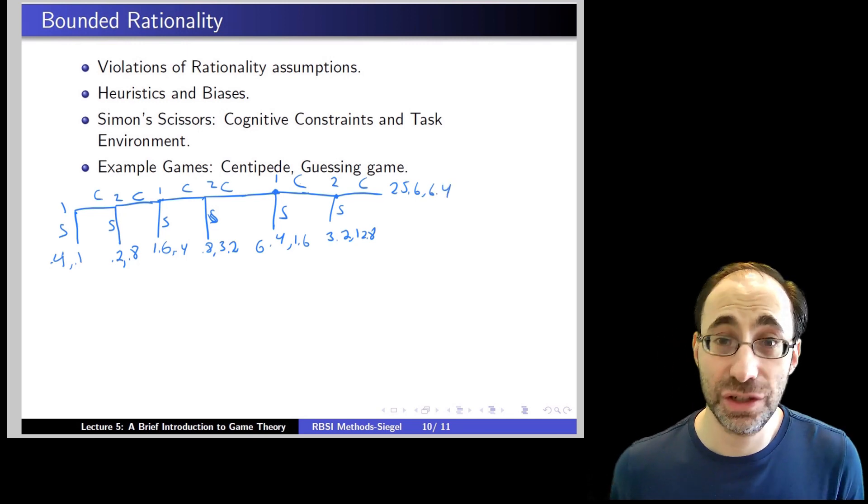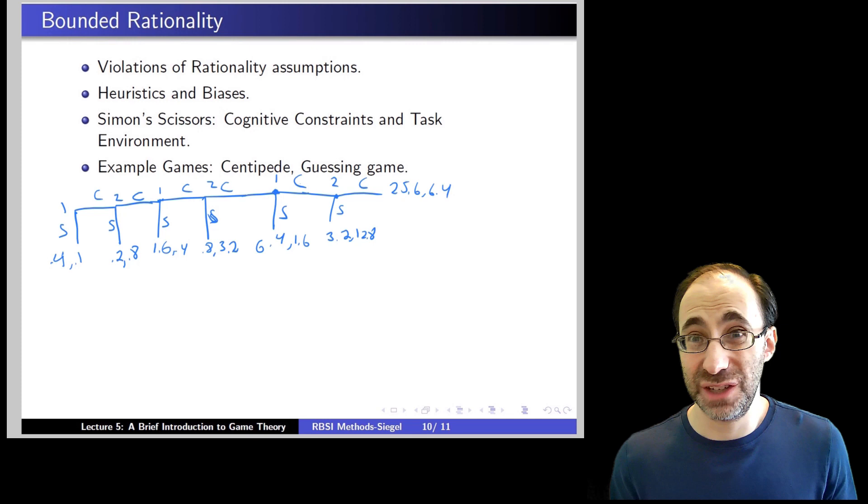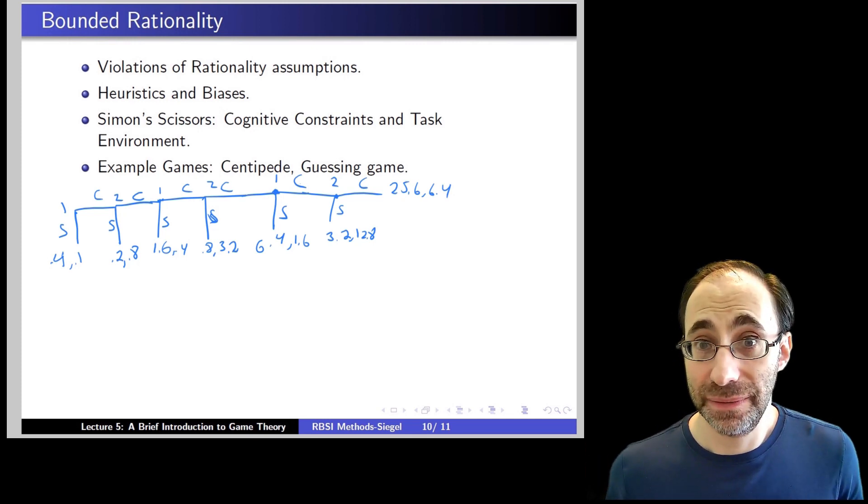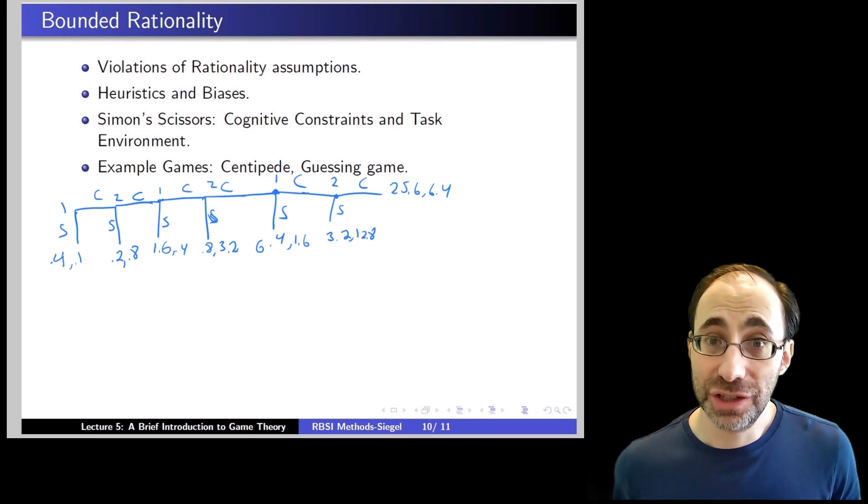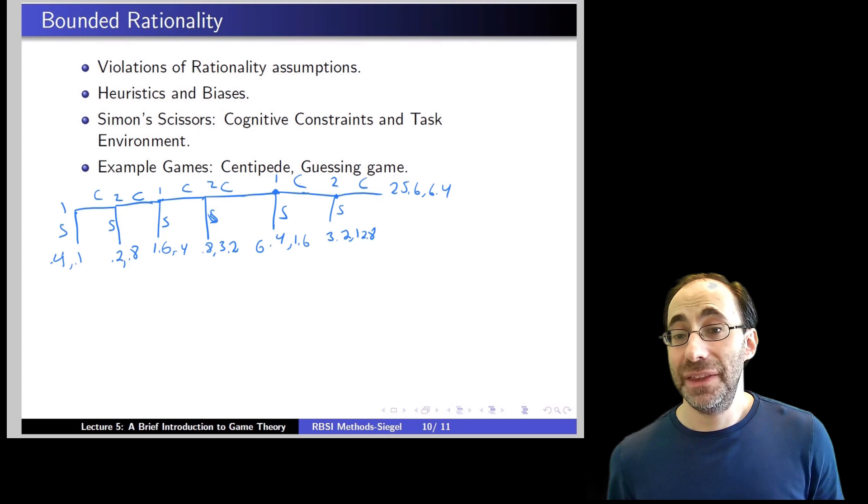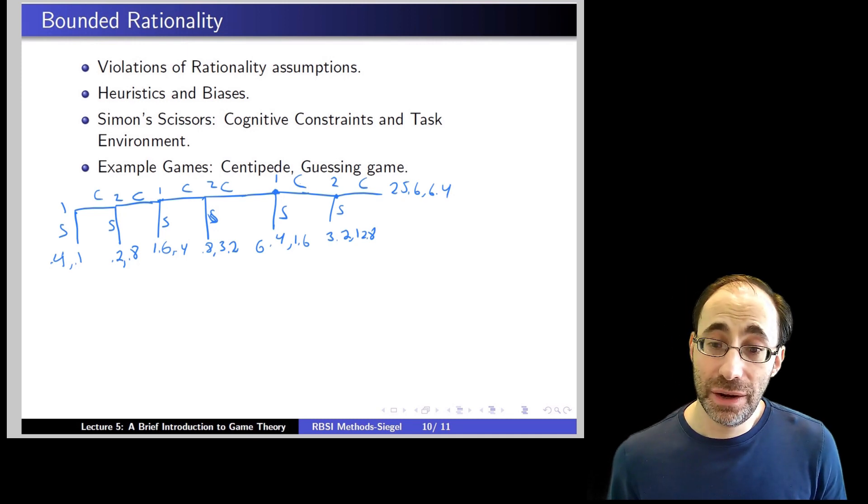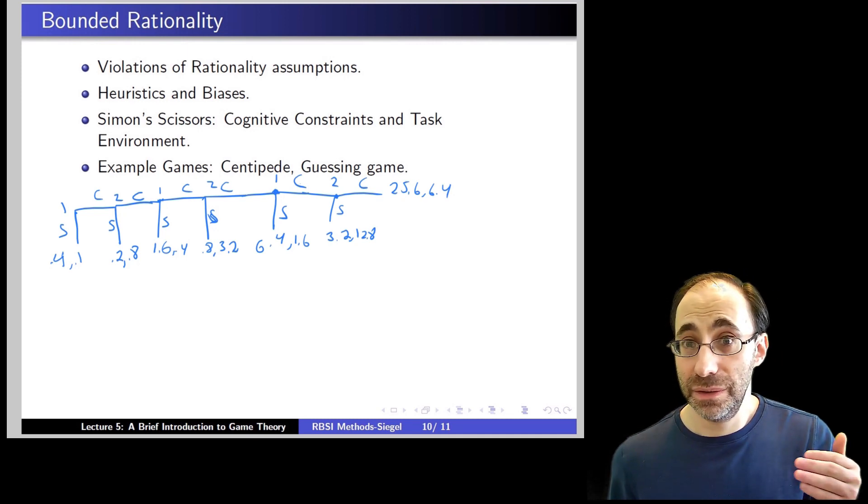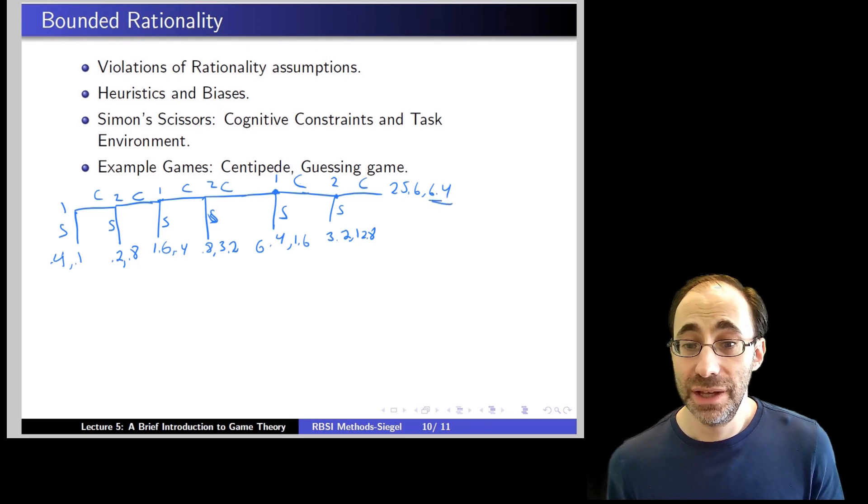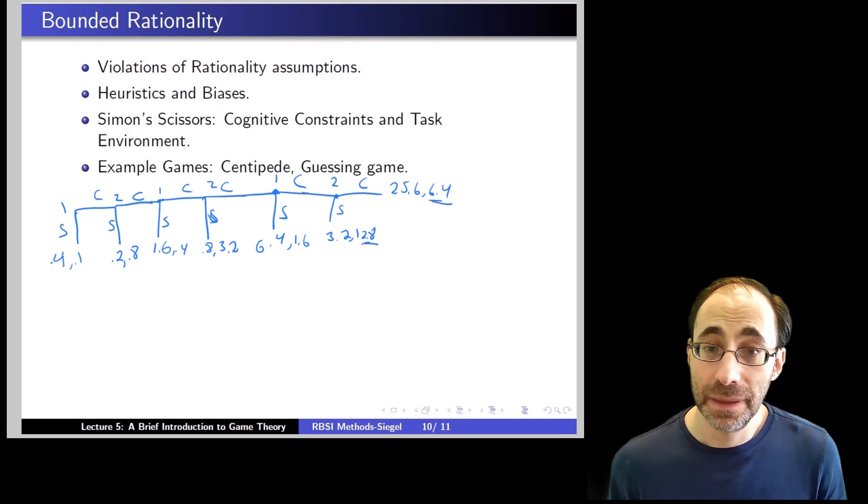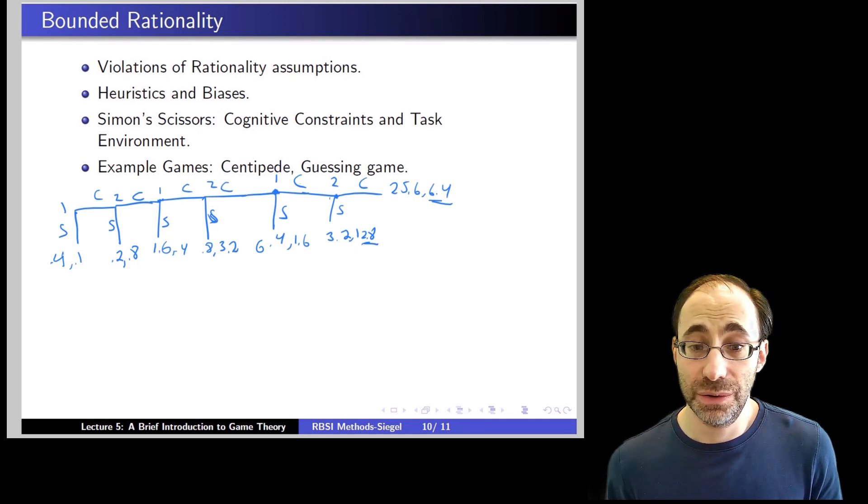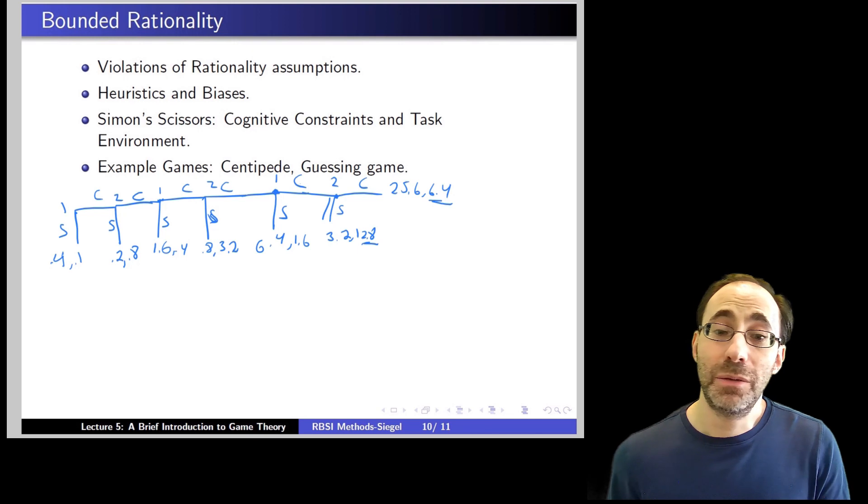Now, the first question here, as you should always do when you're dealing with bounded rationality, is to figure out what the rational decision would be first. What should the player do rationally? Well, we've used backward induction. This is a sequential game, so we can use backward induction. In the last period, we're comparing player two's payoffs. We compare the payoff over here, $6.40, to the payoff over here, which is $12.80. $12.80 is better than $6.40, so player two should stop when this node is reached.